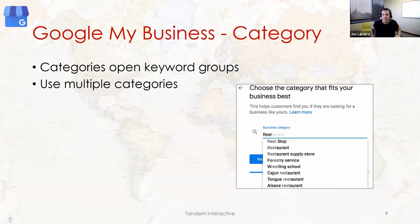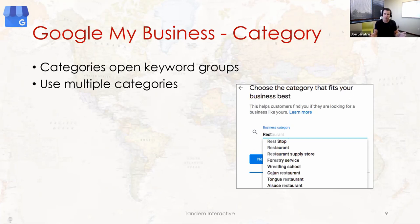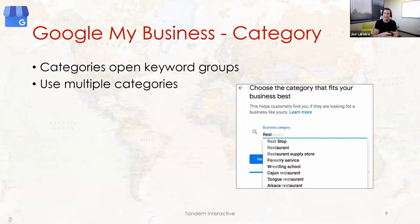Let's move into Google My Business. The categories you choose for your business are important because they actually open up groups of keywords. For example, with rehab centers, you can write 'drug rehab' in the name and description, but if you don't select the right category that unlocks 'drug rehab' as a keyword, you won't rank for that phrase. The correct category for drug rehabs is actually 'addiction centers.'